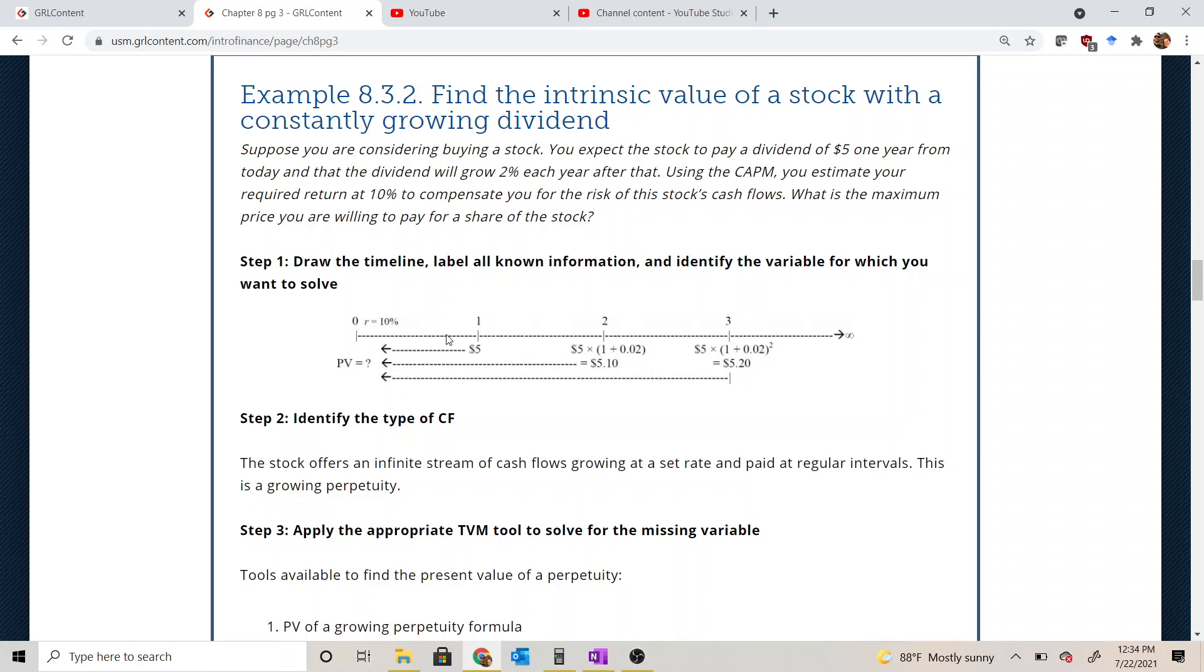We're going to start by mapping out the cash flows. So time period zero is when we're trying to come up with the value of the stock. Our discount rate that we're going to use to estimate the present value is 10%, and that was derived using the capital asset pricing model. So this is our minimum required return. So when we use this as a discount rate, what we're going to come up with is kind of the maximum price we would be willing to pay, the maximum price that would give us this return, this minimum return.